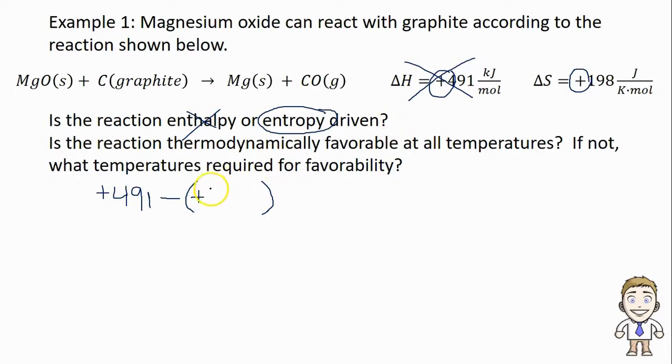So you could imagine one set of temperature conditions where T delta S is smaller than delta H. Let's say the temperature is such that the term is 400. Under those conditions we'll get a positive answer for delta G. So at that temperature the reaction is not thermodynamically favorable or not spontaneous.